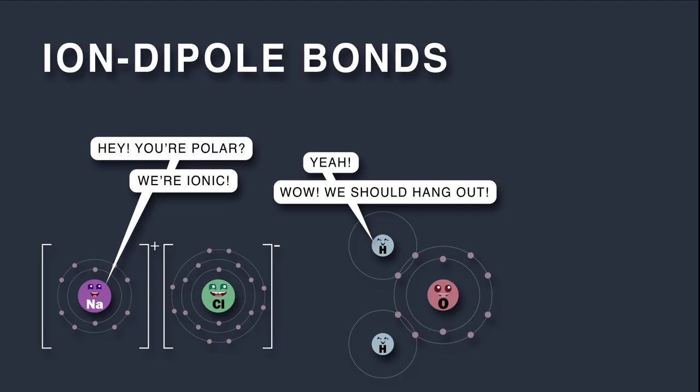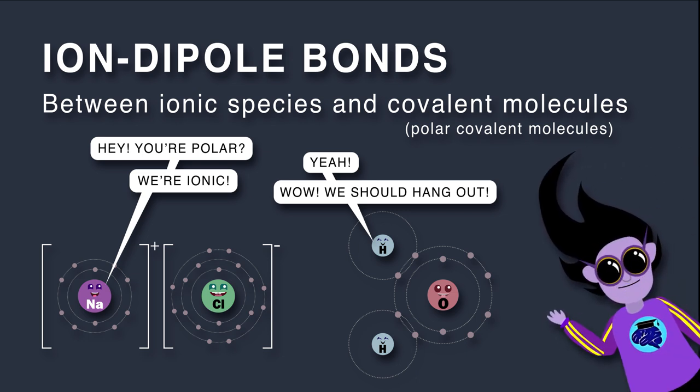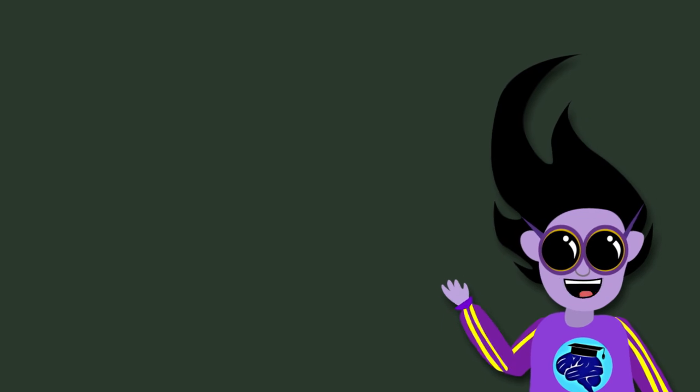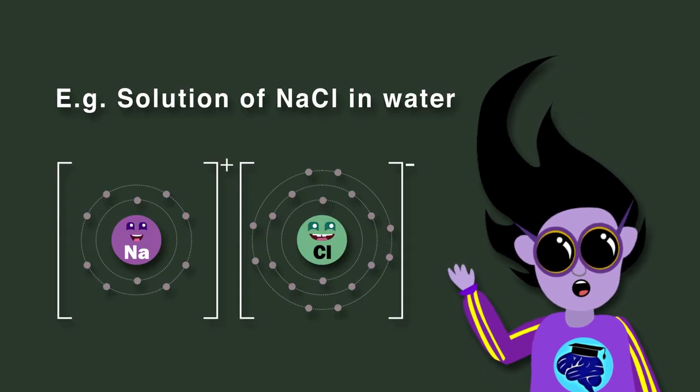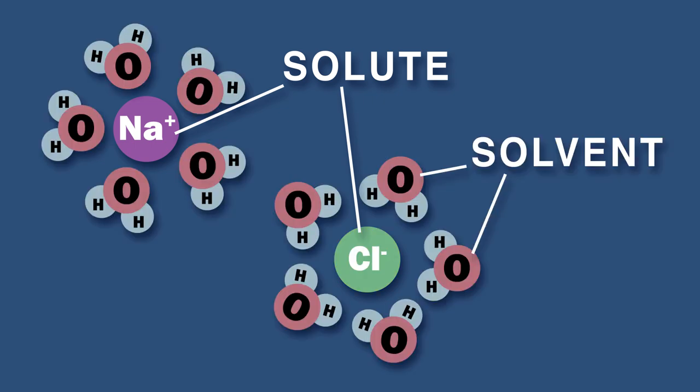There are also ion-dipole bonds, which are between ionic species and covalent molecules, specifically polar covalent molecules. These bonds can be strong. These forces of attraction can operate in a solution of sodium chloride in water. The solute, sodium chloride, dissolves, dissociating into ions—sodium cations and chloride anions. The solvent molecules, water, surround the ions.